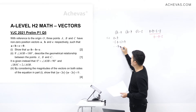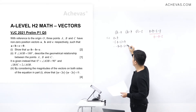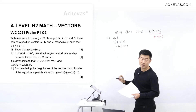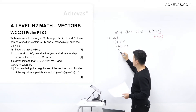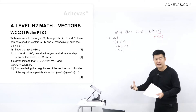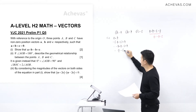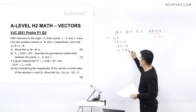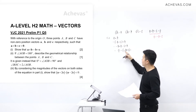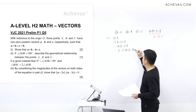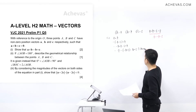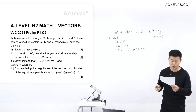So we have (minus b minus c) cross b, which gives minus b cross b minus c cross b. And b cross b is a zero vector. Minus c cross b is equal to b cross c. So we have zero plus b cross c, which equals b cross c. And this is what the question wants us to show.